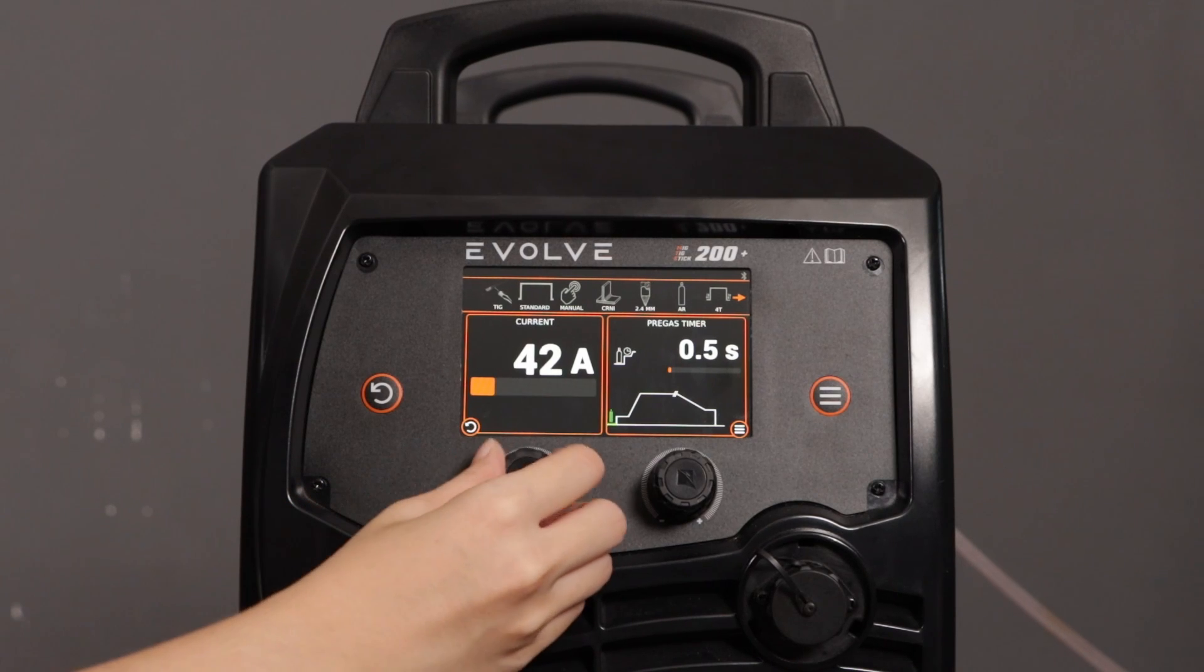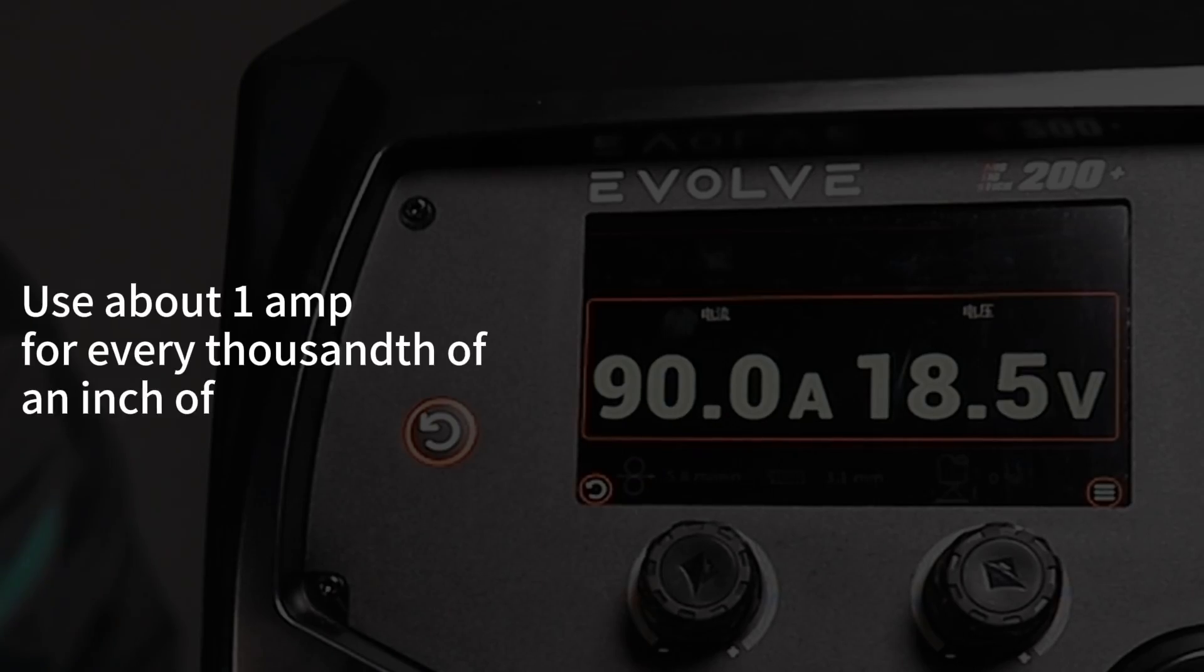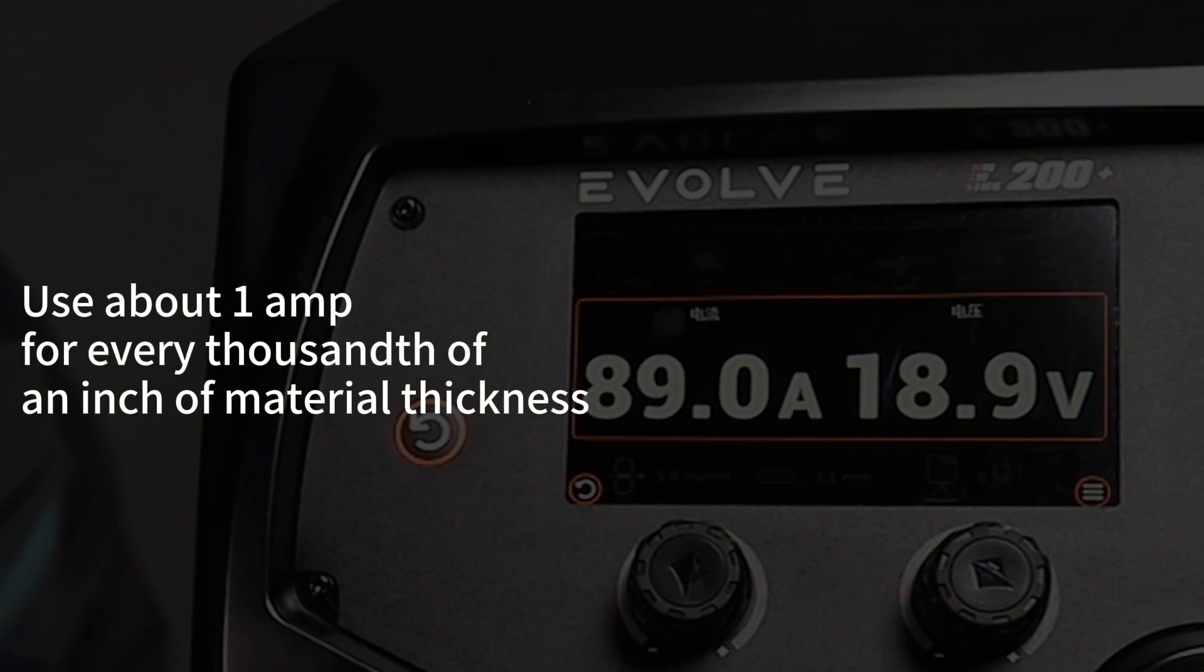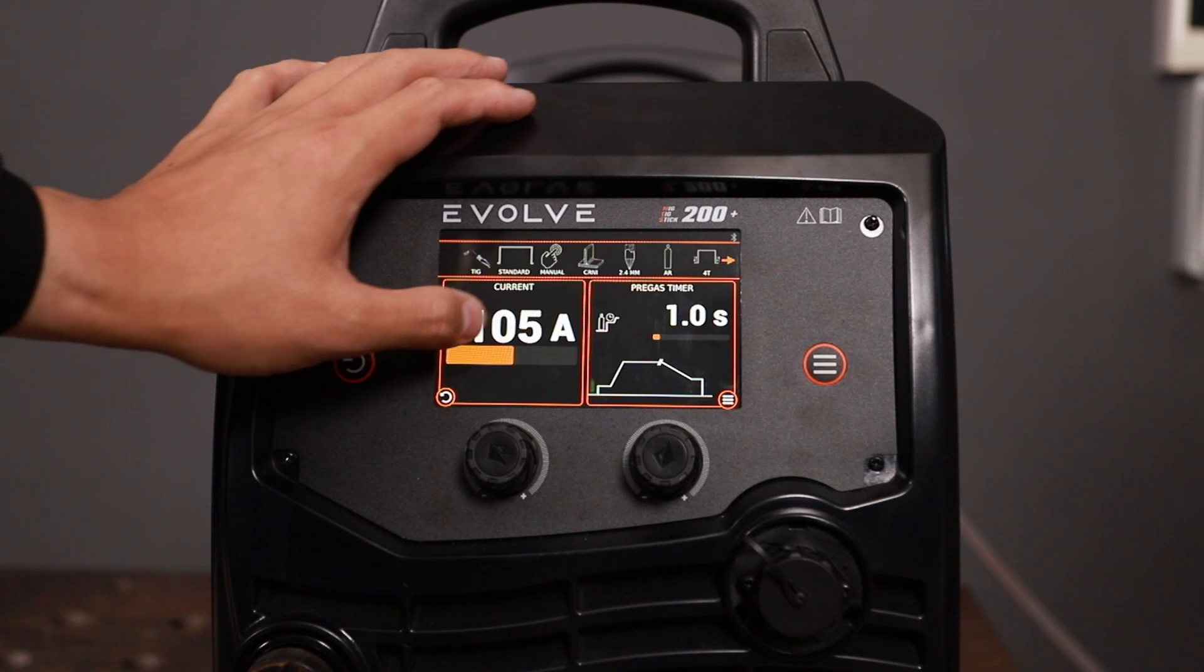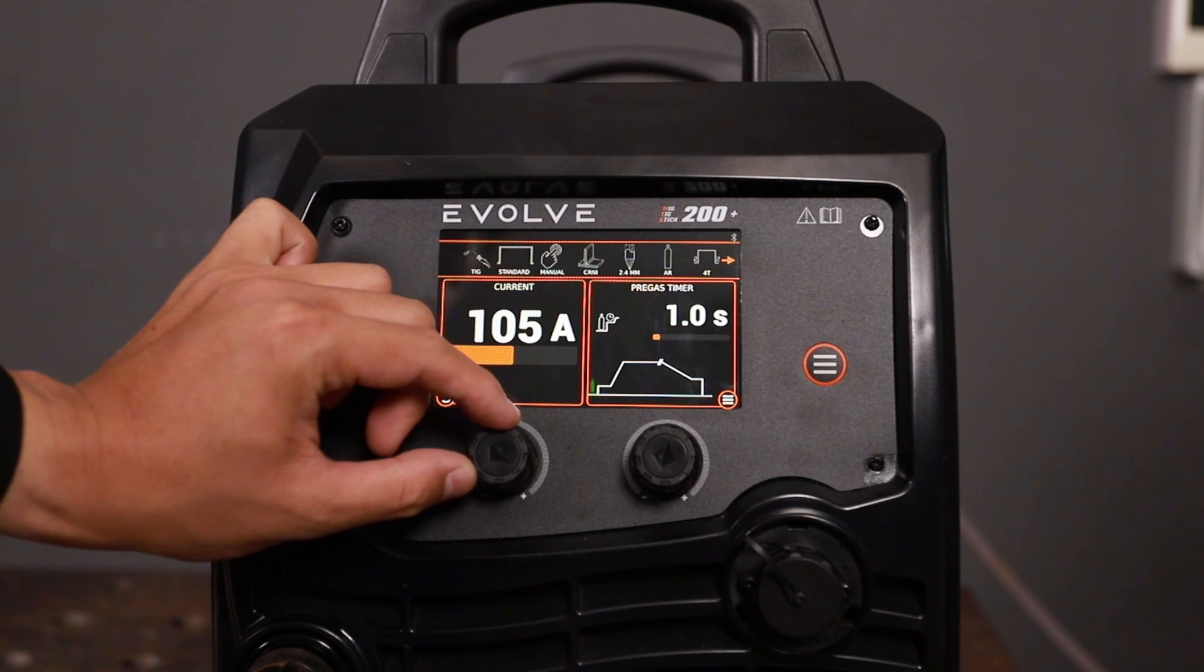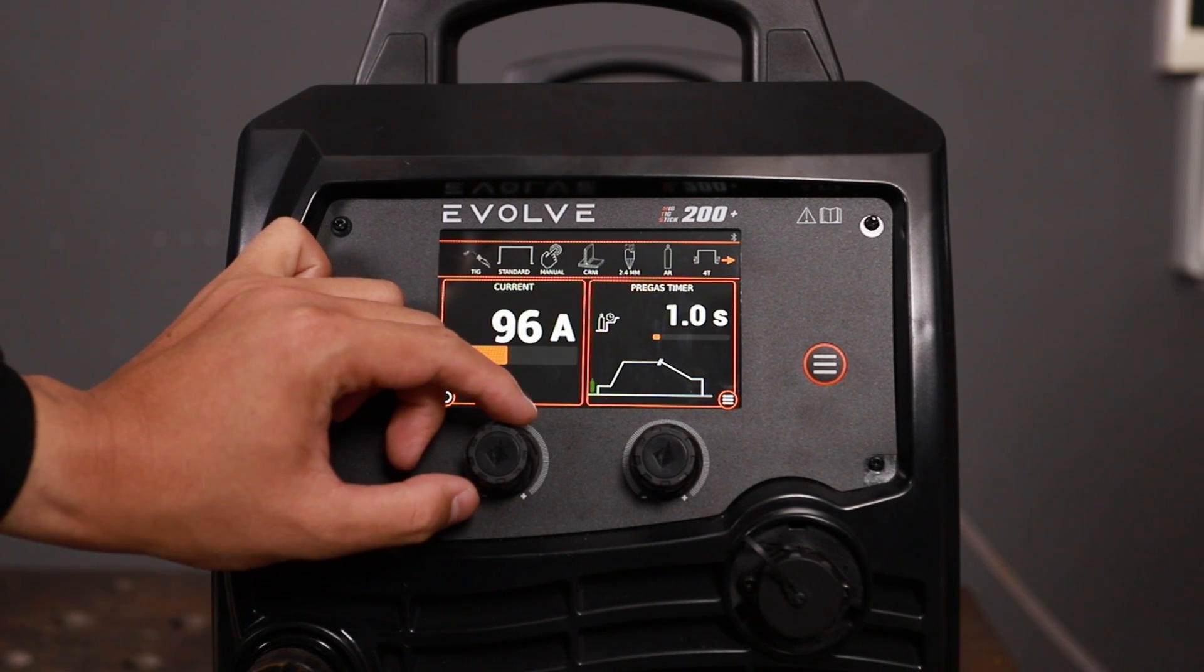Set the initial current between 20A to 30A to preheat without prematurely melting the base material. Use about 1 amp for every thousandth of an inch of material thickness. For the 5mm stainless steel workpiece, set the welding current to approximately 95A.